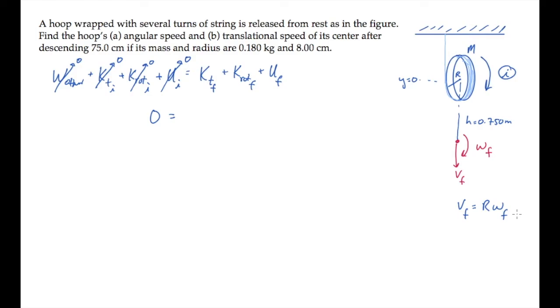Now we can evaluate terms on the right-hand side of the equation. The final translational kinetic energy is one-half mvf squared. The final rotational kinetic energy is one-half I omega f squared. And the hoop has descended a height h, so it has a final potential energy of minus mgh.